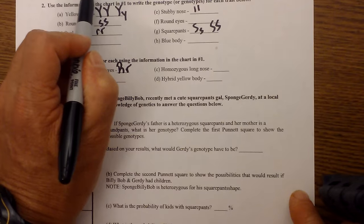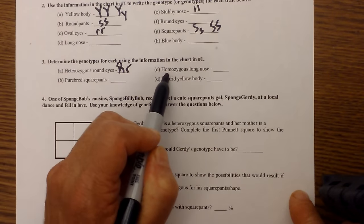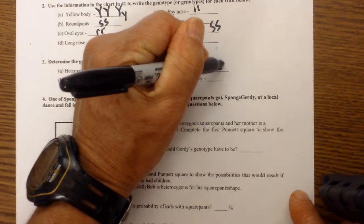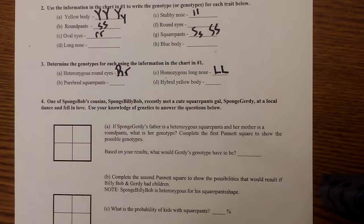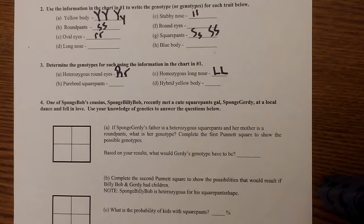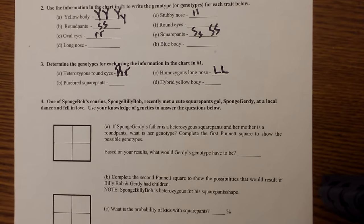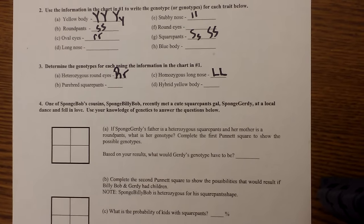Long nose is dominant, it needs to be homozygous so it will be written big L big L. I hope that helps in you determining the difference between homozygous and heterozygous. Thanks for watching, MooMooMath uploads a new math video or science video every day.